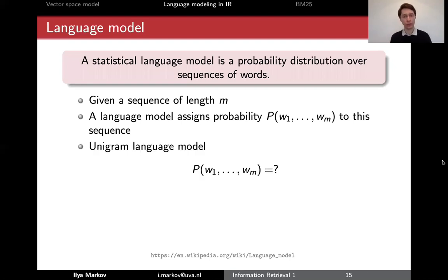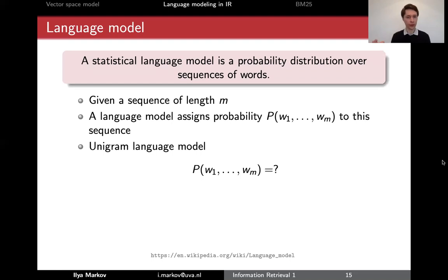For a unigram language model, which means we consider just single words and the language model assigns probabilities to single words only, what would be the probability of a sequence of such single words? Since our language model only deals with single words, it doesn't consider any dependency between these words.